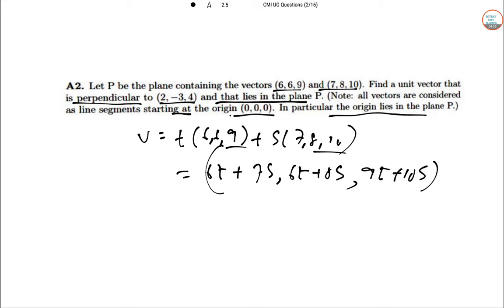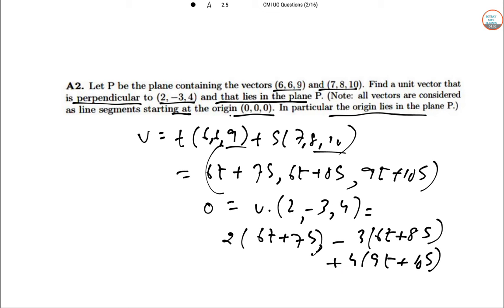And we need 0 equal to V dot 2 minus 3 comma 4 equal to 2 into 6T plus 7S minus 3 into 6T plus 8S.